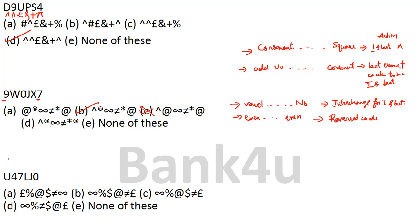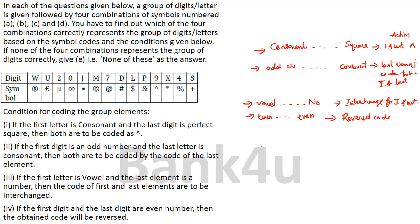Question 3: U47LJO. The first one is U — a vowel. The last one is O — a number? Actually let me verify: the last element is O (zero, a number). Condition 3 applies — vowel first, number last — so we interchange the codes of first and last. Code for O (zero) is infinity, placed for first; code for U is pound, placed for last. Middle elements: 4 is percentage, 7 is at-the-rate, L is dollar, J is not-equal-to.